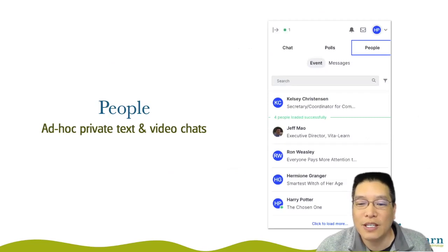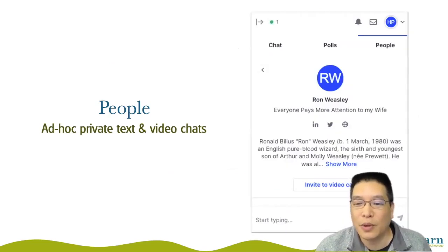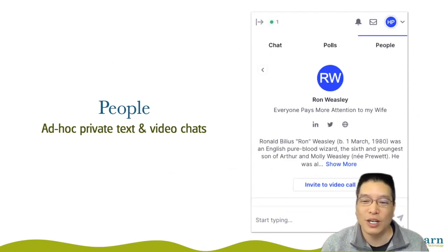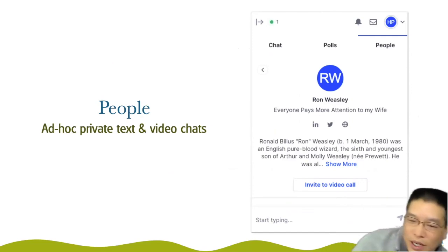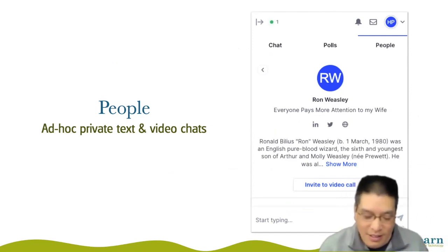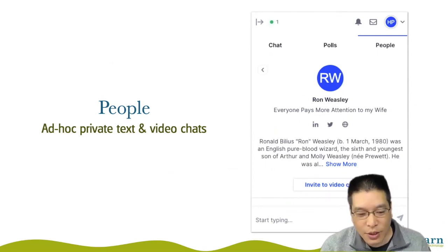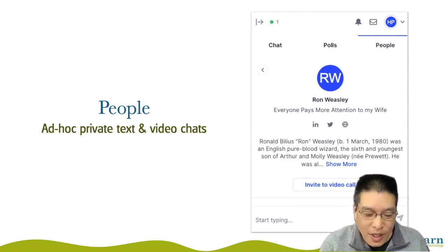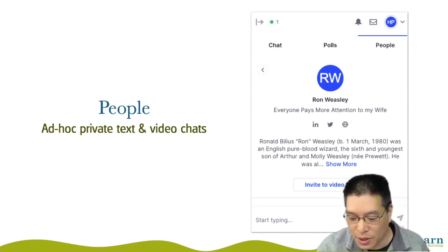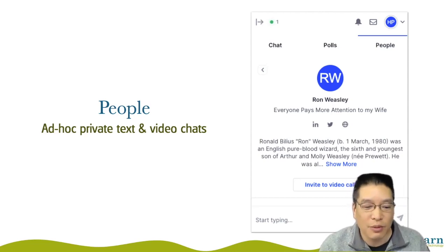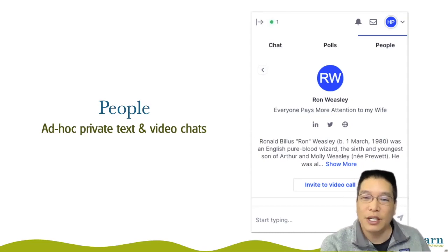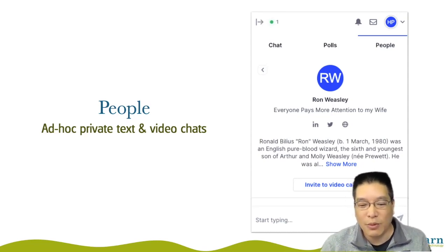If we go over to the people tab, you'll see the list of all the folks who are registered for the conference. If you click on a person — here I've clicked on Ron Weasley — you can see his tagline, his LinkedIn, his Twitter, and a URL to a webpage. There's a little description of who he is, and you'll see options to invite to a video call and start typing to text chat. After chatting you might click that invite button; it'll pop up a link in your text chat and Ron will see a notification saying you're inviting him to a video chat. If you both click the button, it'll turn on a one-to-one video between the two of you. None of those private video chats are recorded — the only recordings made are when you are in a session room.